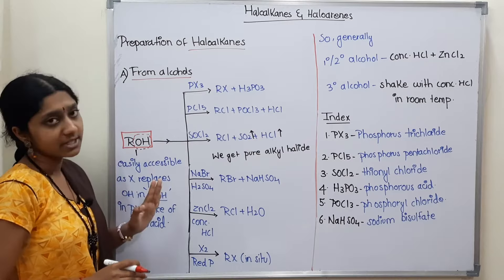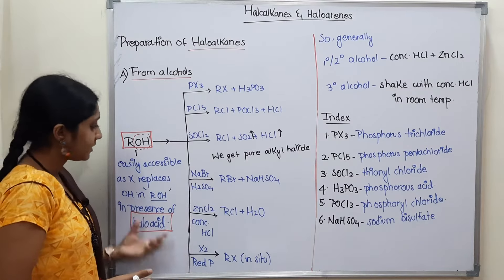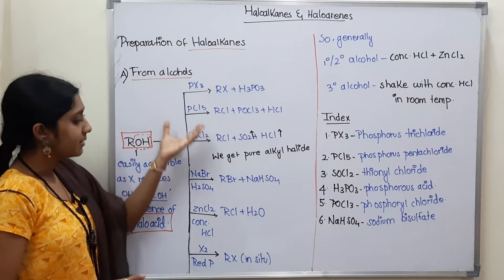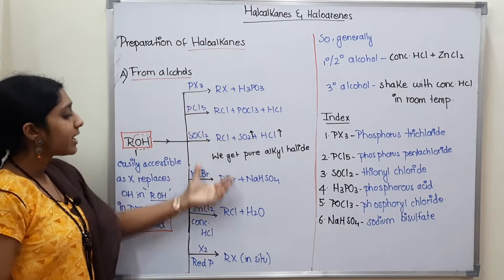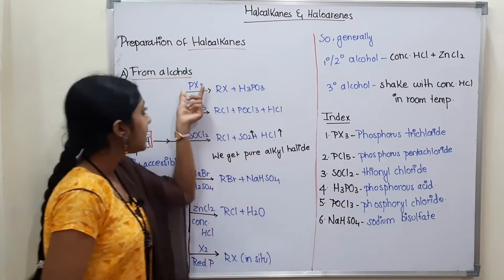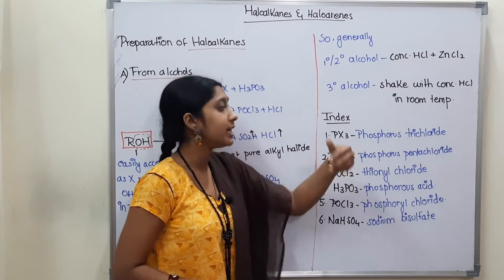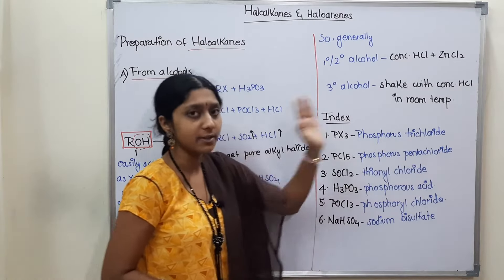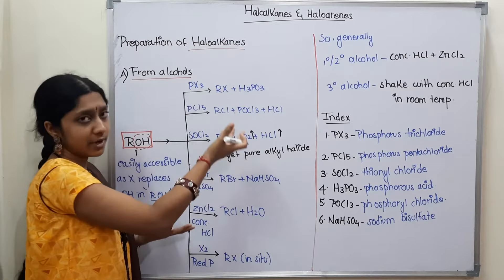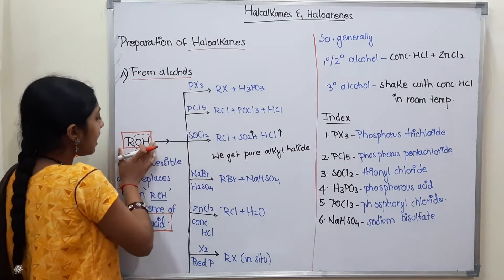In this method, X replaces OH in ROH. We take a halo acid such as HCl. Using the acid, OH is replaced by X. The reagent PX₃ — that is, phosphorus trichloride or trihalide — is used. The reaction is: ROH + PX₃ → RX (haloalkane) + H₃PO₃. H₃PO₃ is phosphorous acid. So the first method is ROH with PX₃.